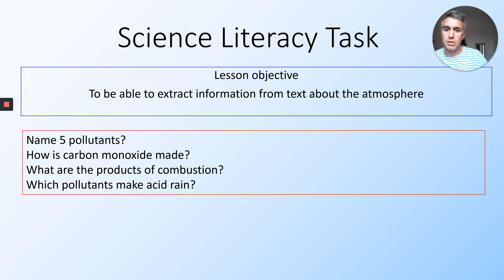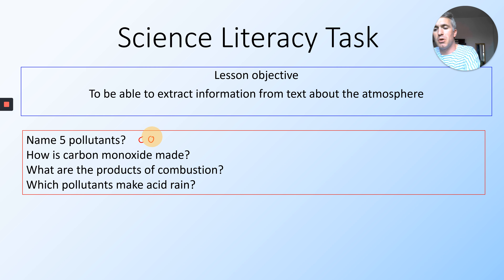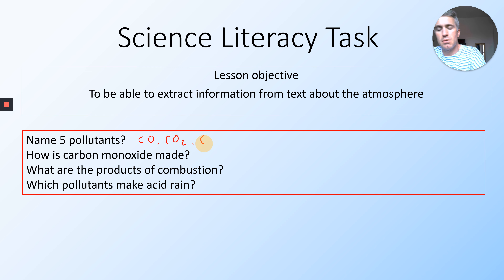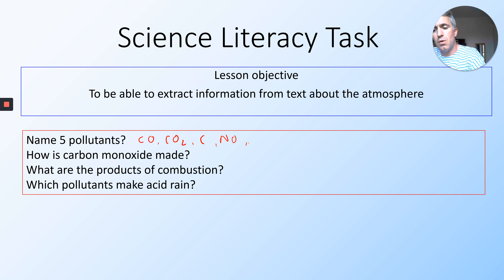Okay, so let's answer the first one — five pollutants. Well, looking at the next question, it talks about carbon monoxide, CO. You can have carbon dioxide, CO2, or we could just have C, which is carbon particulate. You could have NO, NO2, or SO2. There we go — there's more than five. Did you get any of those?